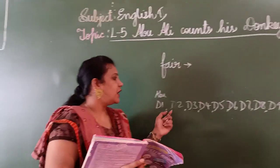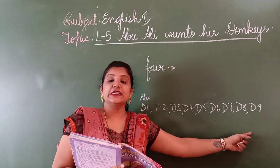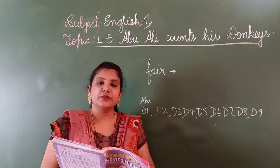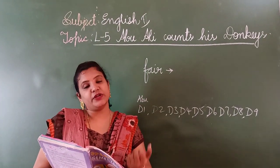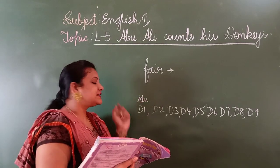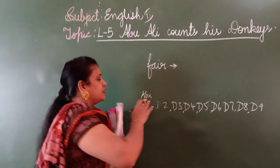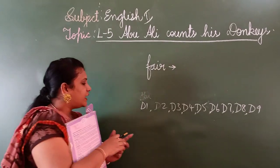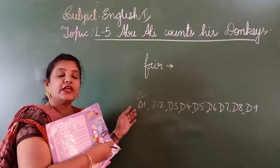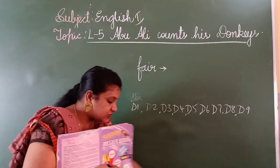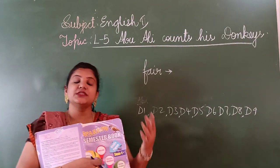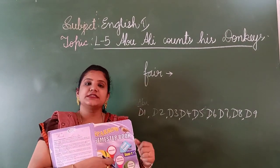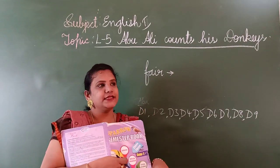Again, what did Abu Ali do? He counted and it was only eight donkeys. Now he is very confused. He says, I got nine donkeys, but there are only eight. Then he gets down from the donkey and starts searching everywhere — under the rock, near the trees, everywhere in his surroundings. Still, he couldn't find his donkey.